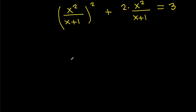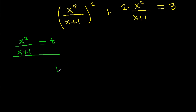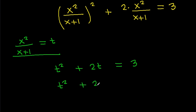Now if we let t = x²/(x+1), then the equation becomes t² + 2t = 3, which gives t² + 2t − 3 = 0.